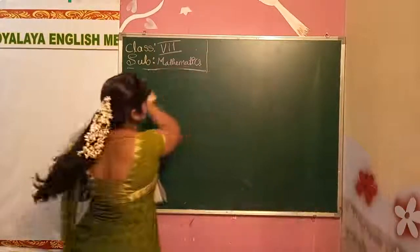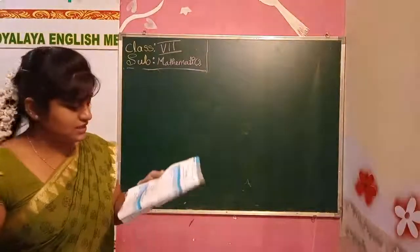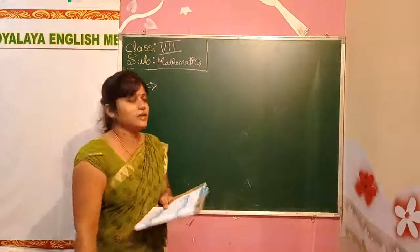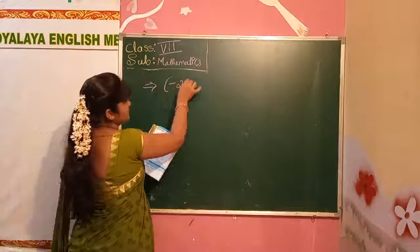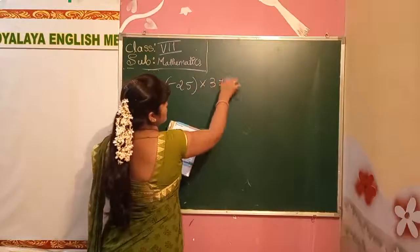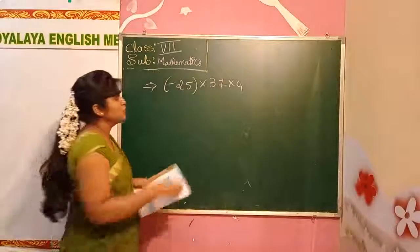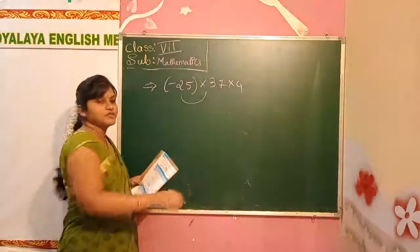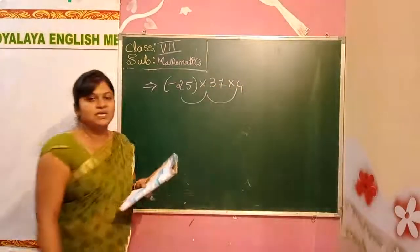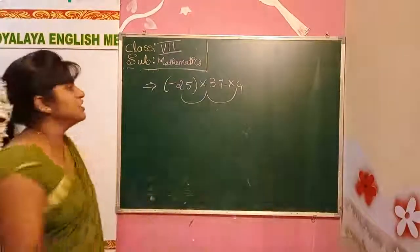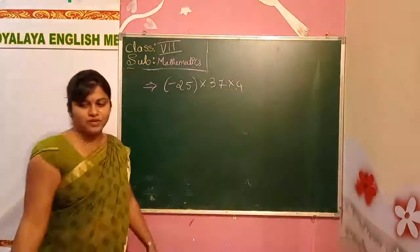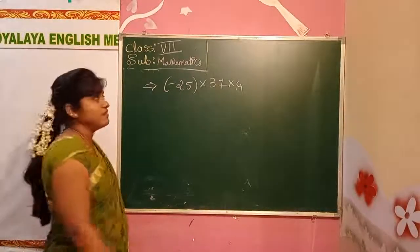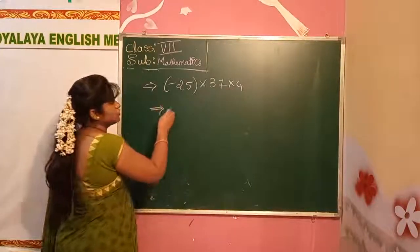The next topic is multiplication in an easier way. If we have numbers like 25 into 37 into 4, you would normally multiply the first two and get a big number, then multiply with the third — which is a little difficult. So instead, we make a group using the associative property. We will use the associative property and make a group.